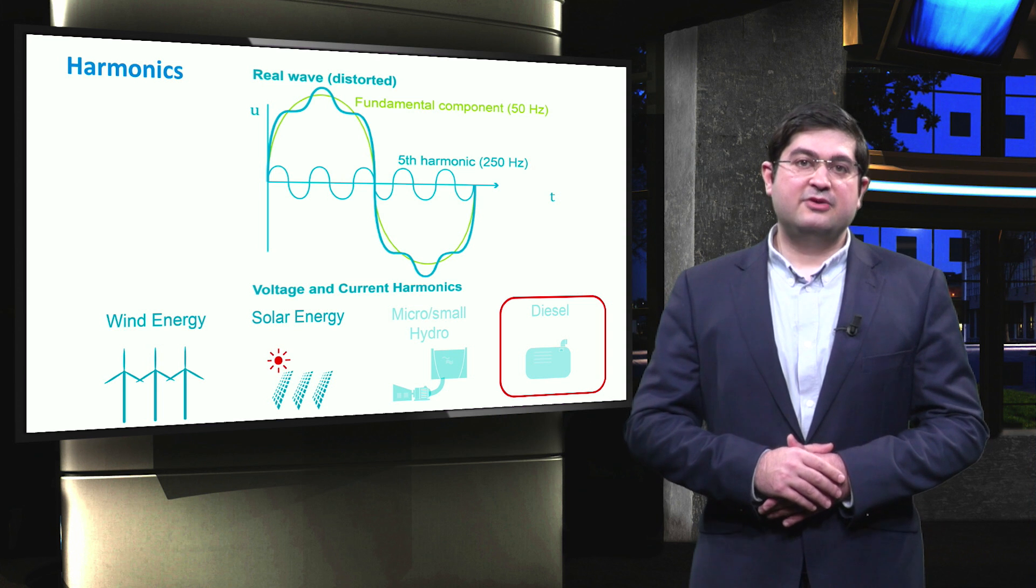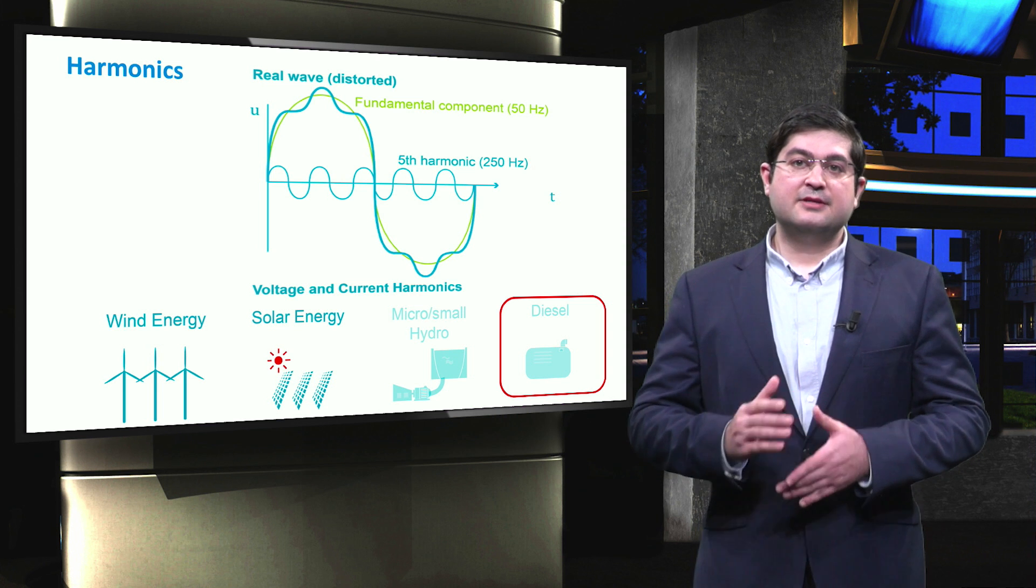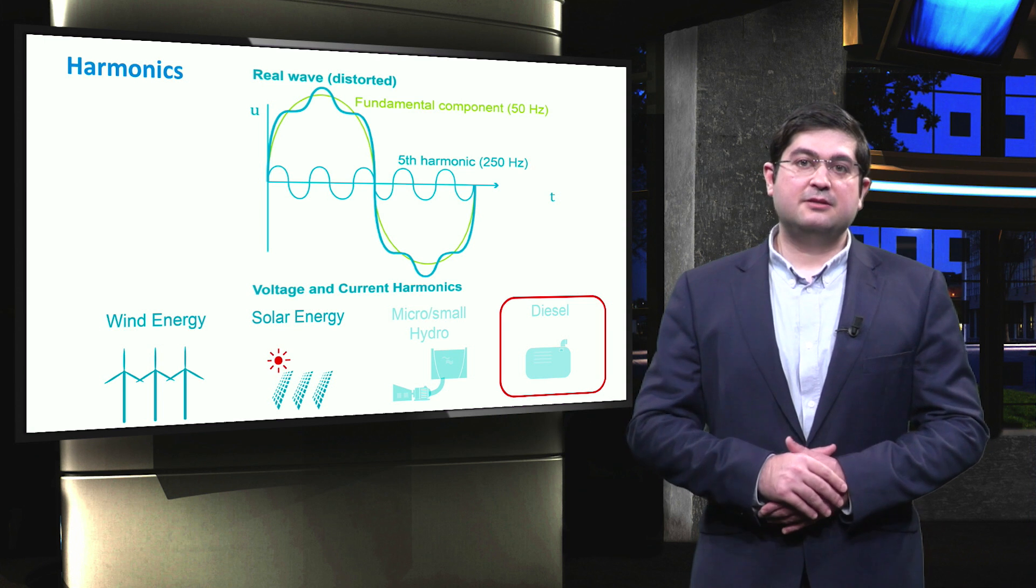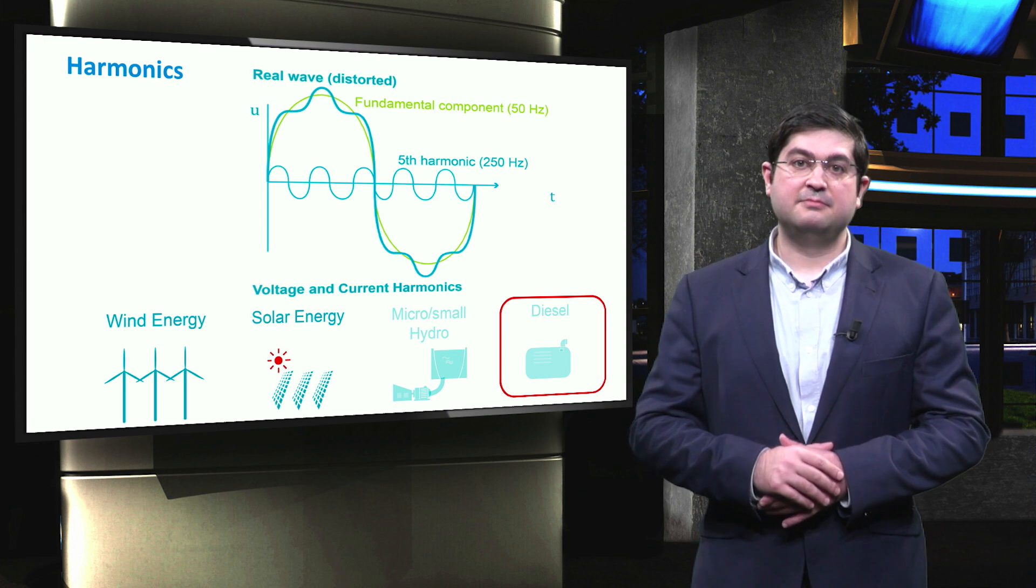According to EN 50160, the total harmonic distortion of 8% will be acceptable for 95% of the time on a weekly basis.